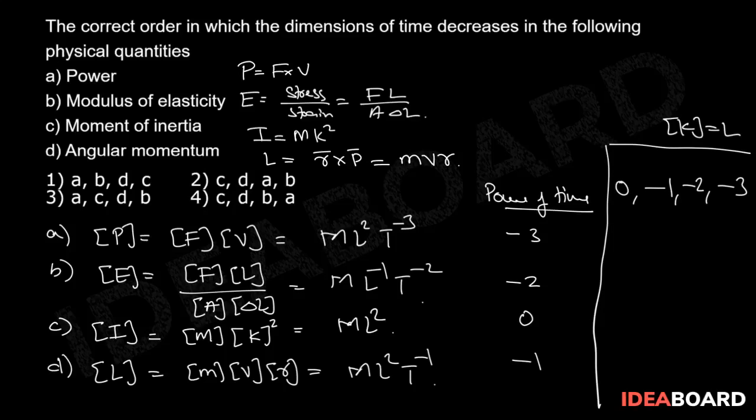For which physical quantities order is dimensions of moment of inertia, dimensions of angular momentum, dimensions of modulus of elasticity, and dimensions of power. So the right answer for the given question is option 4.